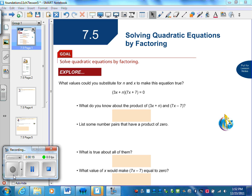Solving quadratic equations by factoring. So first of all, we look at this example. We say what value can we put in for the number n and the number x to make this equation true? I have a number, 3x times 10 represents a number, multiplied by another number to give me zero. What do I know about their product?